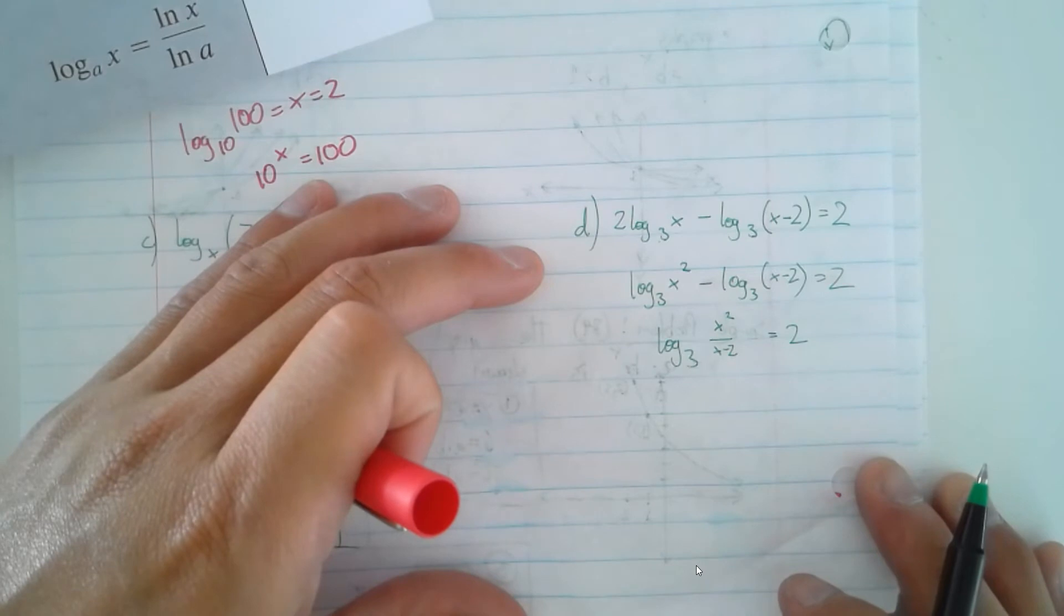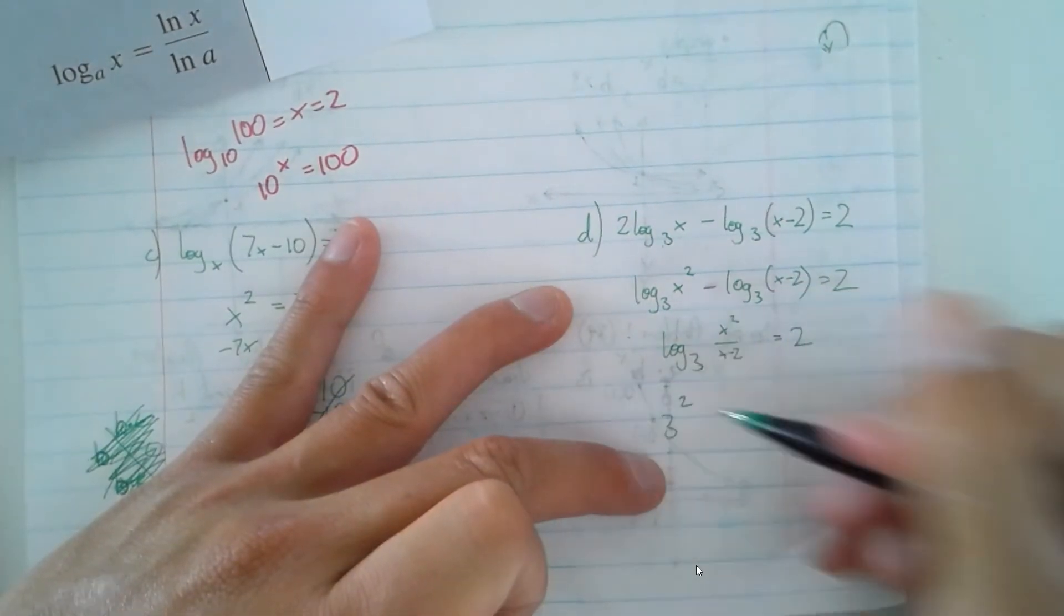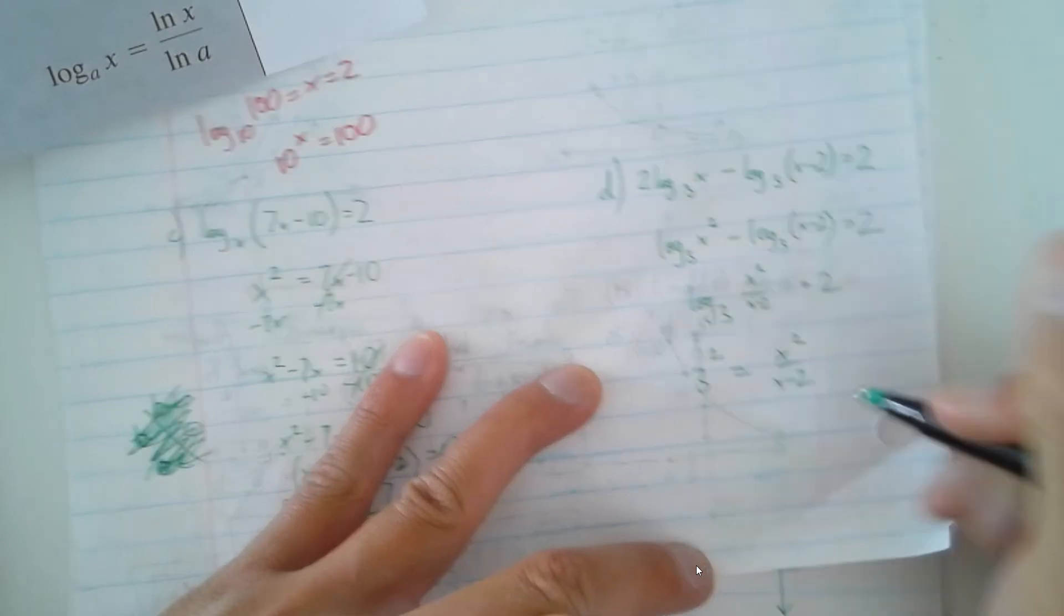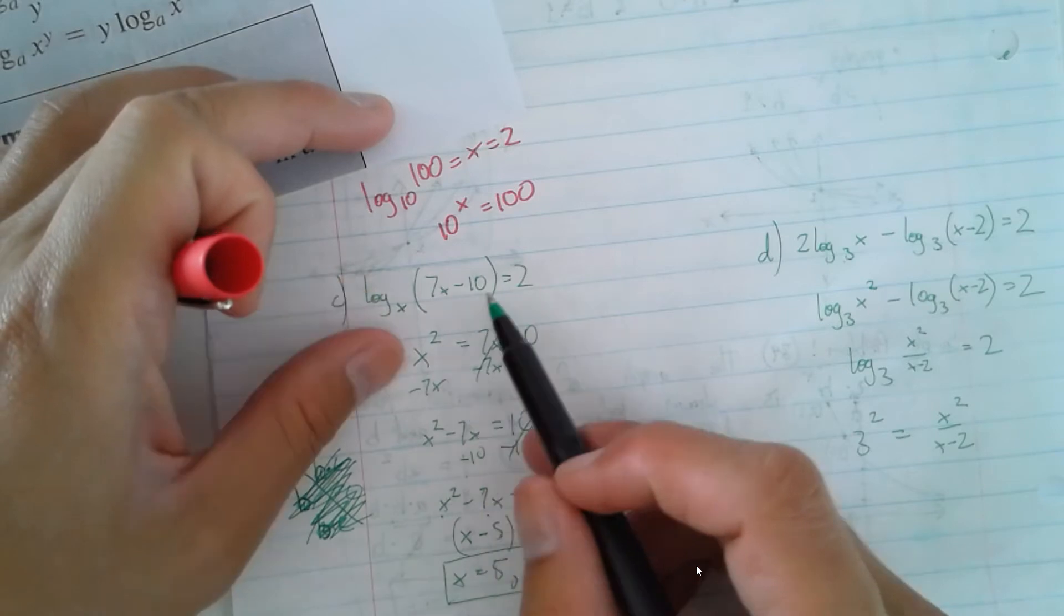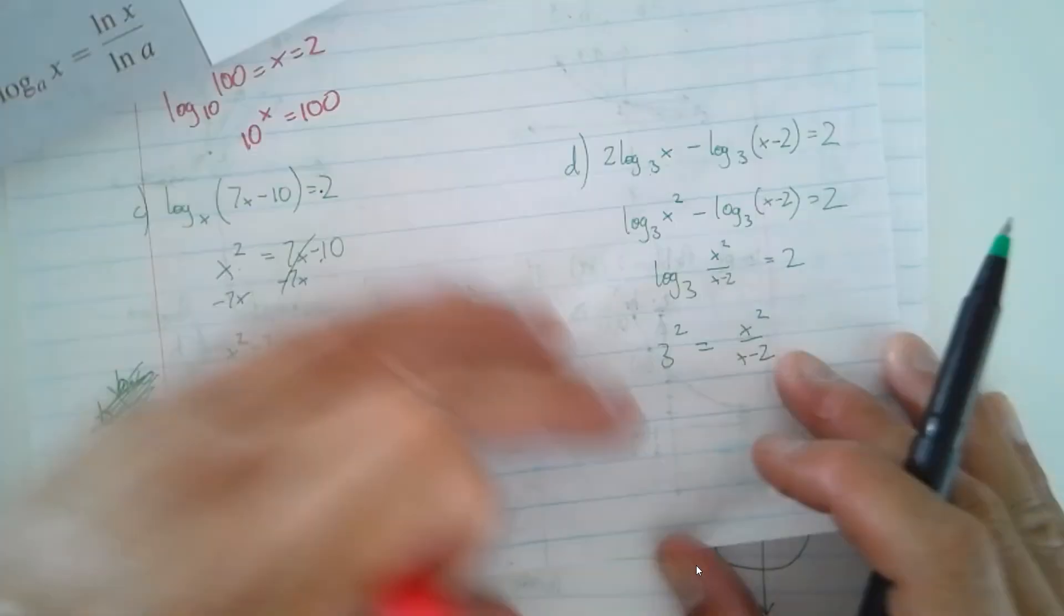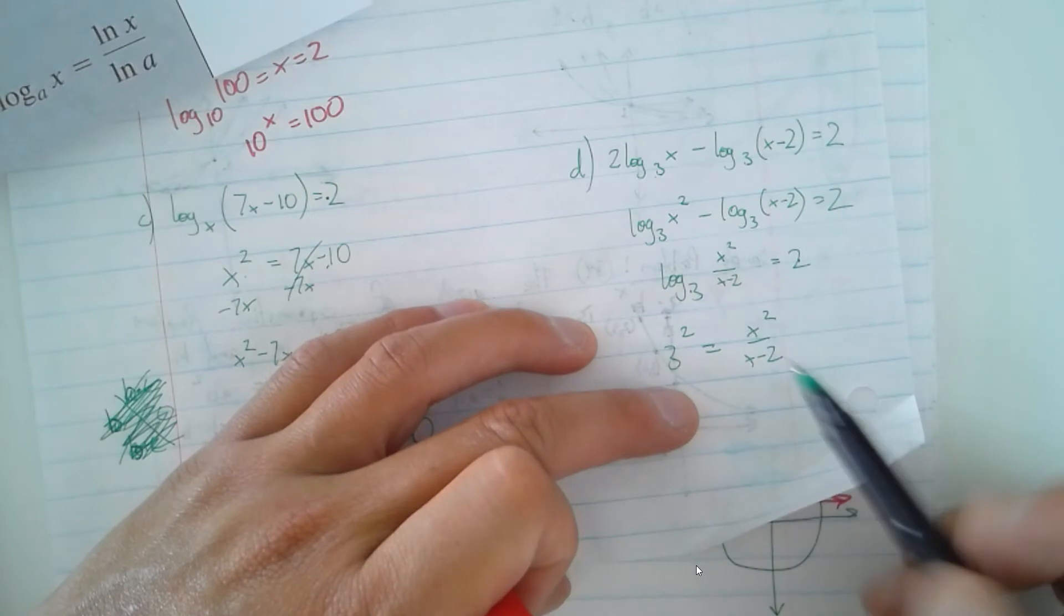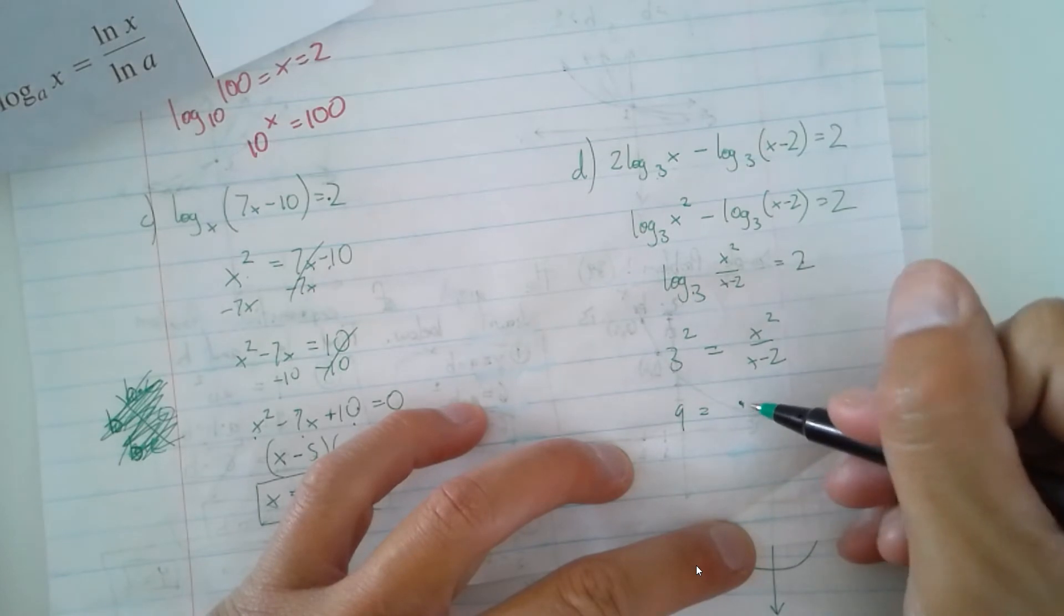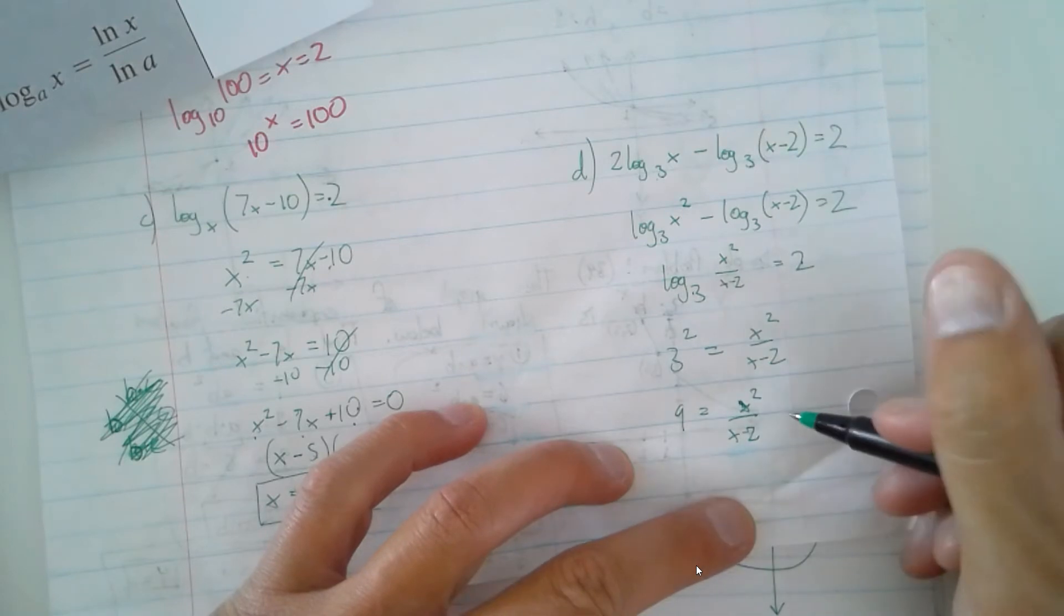And then you're like, what do I have here? Well, I can also say that 3 squared is going to be equal to x squared over x minus 2, sort of in a similar way that I set this up from here. This basically here is saying that 3 squared equals x squared over x minus 2. So that's going to be 9 equals x squared over x minus 2. And then I'm going to multiply both sides by x minus 2.